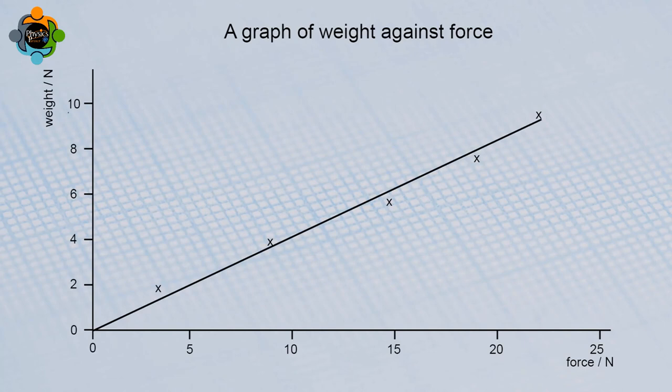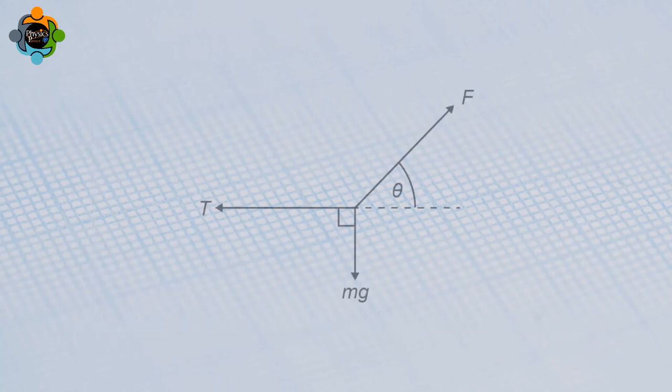A line of best fit is drawn. The gradient is equal to sine of the angle. Can you prove this relationship using your understanding of vector triangles and equilibrium? Refer to the free body force diagram shown.